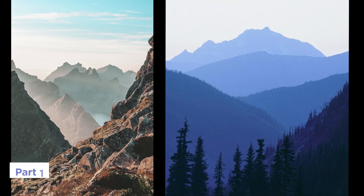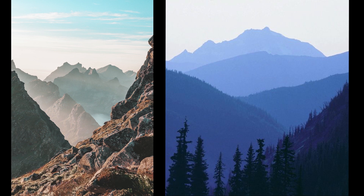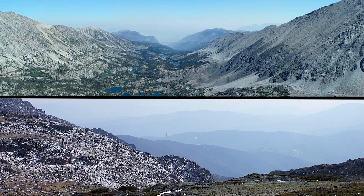Volumetrics, also known as atmospherics or aerial perspective, is the effect that the atmosphere has over great distances by absorbing light and causing colors to get more desaturated and blue over those distances.